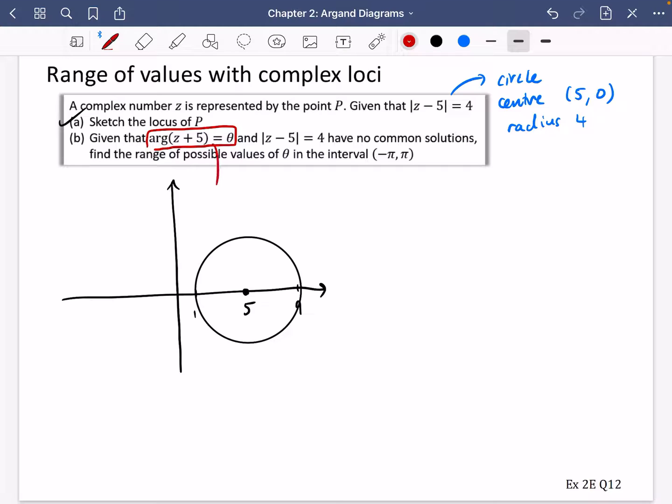It's going to be a half line, okay? It will be a half line and the starting point will be at (-5, 0). So I'm going to go over here and I'm going to say it's going to be a half line. It should do an empty circle at -5. Now, this complex number, this loci, this argument of z + 5 equals θ, it could be something like this, okay?